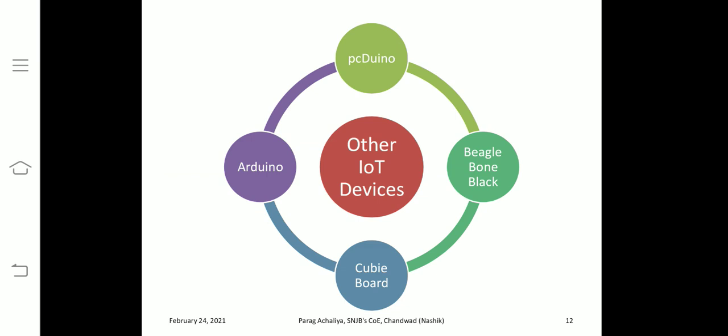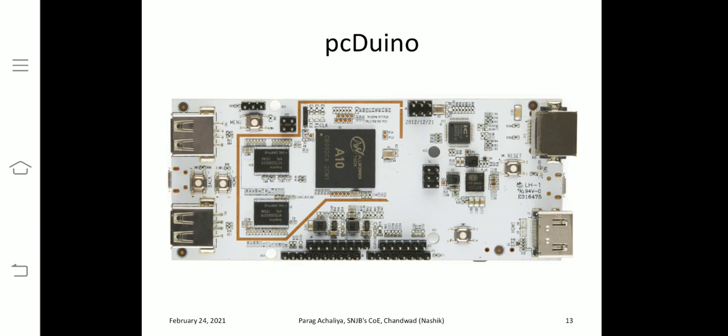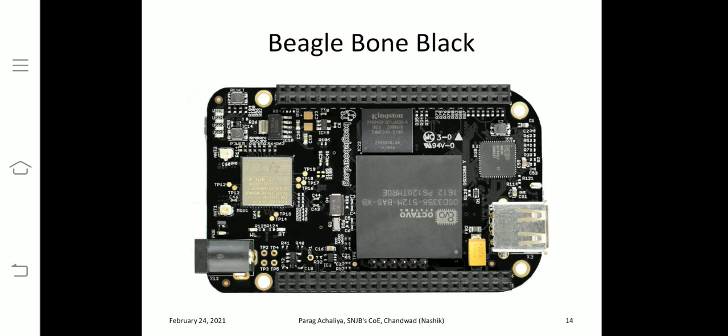Today we will see the other IoT devices. Up to the previous slides we have gone through the Raspberry Pi. Now we will see other IoT devices: number one is PC Do You Know, there is also Arduino, BeagleBone Black, QB Board, and another important one is Arduino. This board will have all the ports for general purpose input/output for attaching sensors and actuators — HDMI, power supply, USB ports — all ports already discussed in the block diagram are available on the PC Do You Know as well. Then there is BeagleBone Black; the name itself suggests the color of this board will be black.